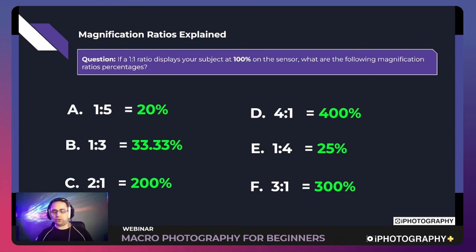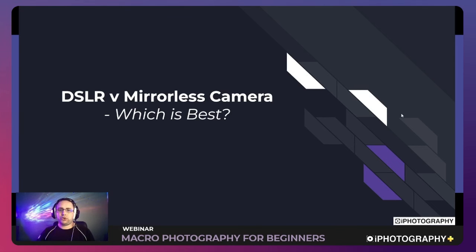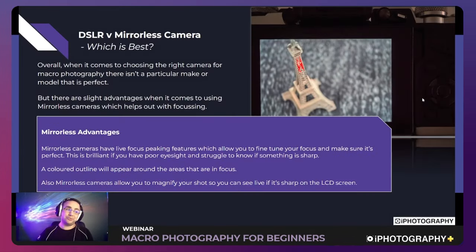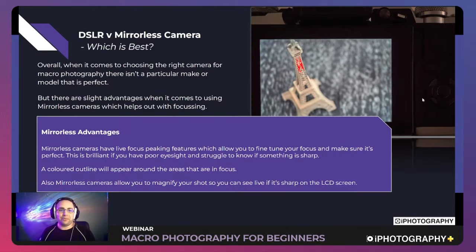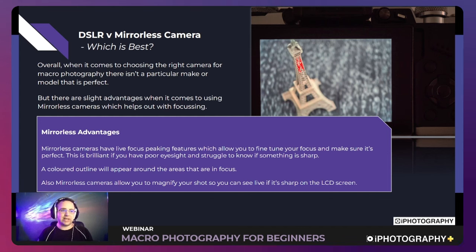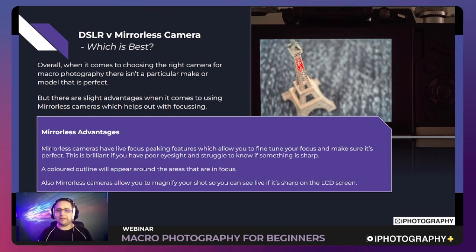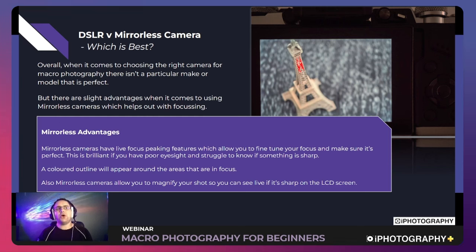When it comes to camera choices — which is best — unfortunately there isn't a definitive answer. What you need to concentrate on is the lens, what you put in front of the camera. That's what makes the biggest difference, along with filters and accessories. In terms of camera body choices, there's very little difference.